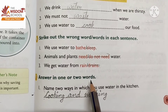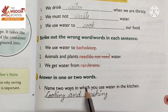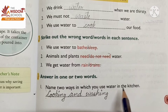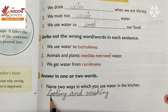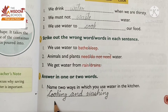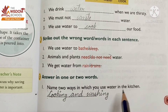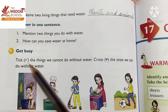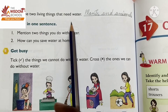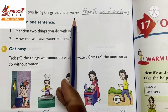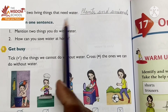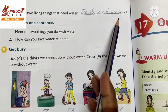Answer in one or two words. Name two ways in which you use water in the kitchen — for cooking and washing. Name two living things that need water — plants and animals. These are two living things, other than human beings, that need water.